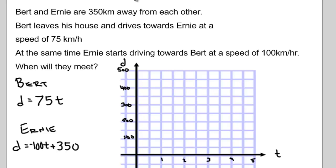I'll graph Bert in red and Ernie in green. I'll start with Ernie. Ernie starts at 350 kilometers away from Bert and goes down 100 kilometers for every hour he spends traveling.